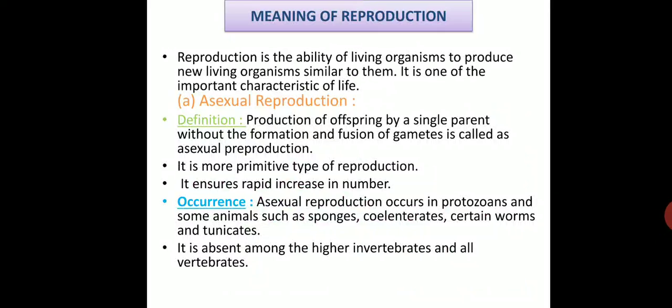Asexual reproduction is a uniparental process in which there is no formation of gametes and no fusion of gametes. Only one parent is involved. This is the more primitive type of reproduction and it ensures a rapid increase in population.